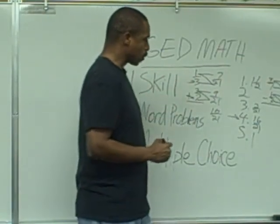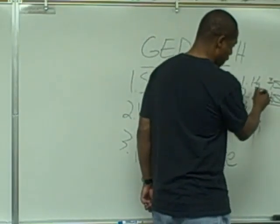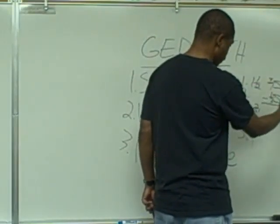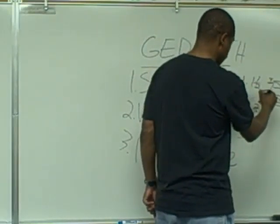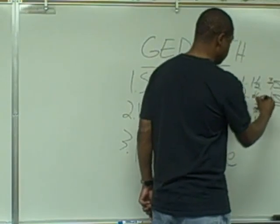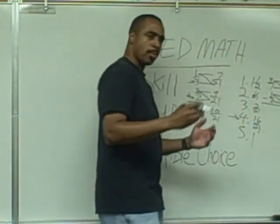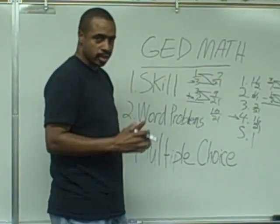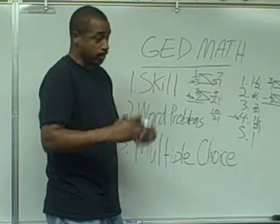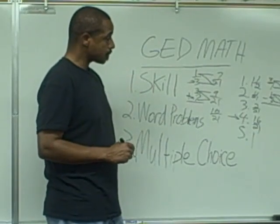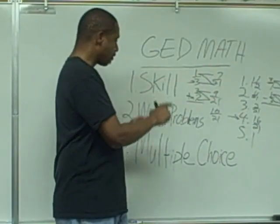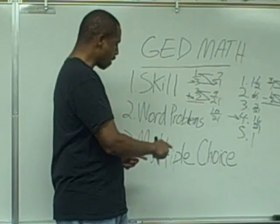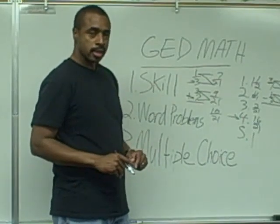Another possibility could be something in between — so if you're guessing in the ballpark you might try that because it looks like it could be right. To summarize: skill, interpretation of word problems, and multiple choice — these are the three key areas.